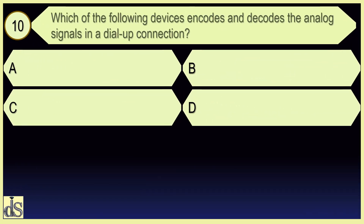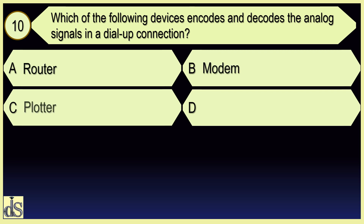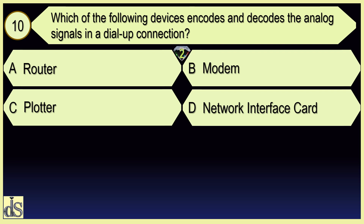Which of the following device encodes and decodes the analog signals in a dial-up connection? Modem.